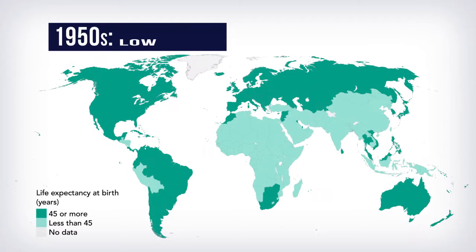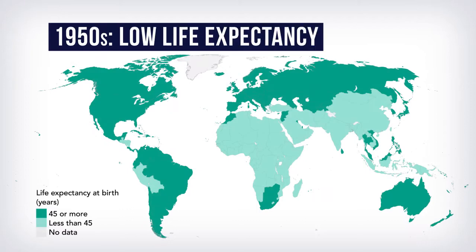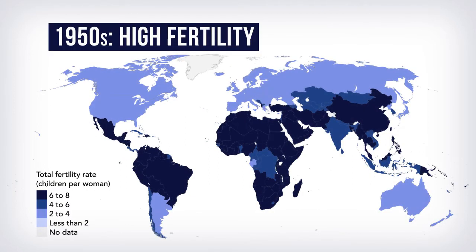High child mortality was also associated with premature mortality. In most parts of Asia and Africa, the average person lived less than 45 years. On the other hand, the fertility rate was high in most developing countries, and most families had more than five children per woman.